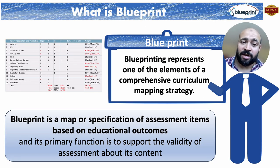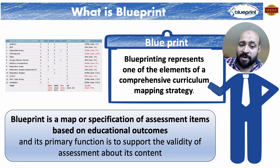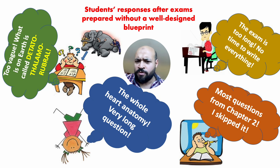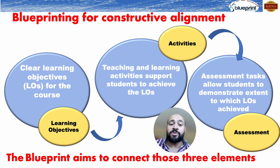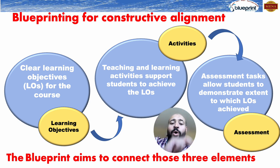The blueprint represents one of the elements of a comprehensive curriculum mapping strategy. By definition, a blueprint is a map or specification of assessment items based on the educational outcome, and its primary function is to support the validity of the assessment regarding the content of the curriculum taught. The blueprint ensures you have clear learning objectives, sufficient teaching and learning activities to support those objectives, and assessment tasks that allow the student to demonstrate the extent to which each learning objective is achieved. The blueprint connects all three elements to produce a successful, valid assessment.